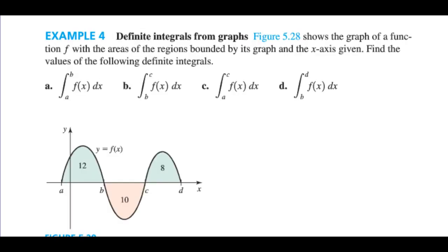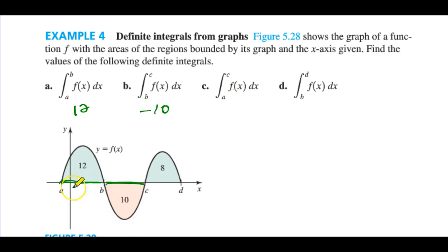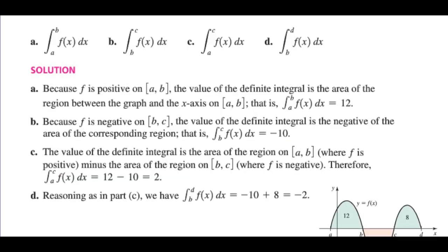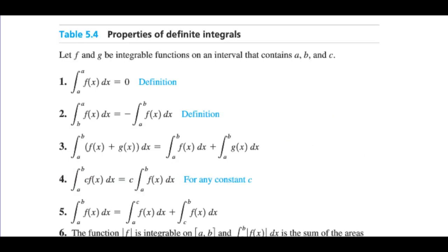Example number four: integrating from A to B, the area is 12. Integrating from B to C gives negative 10 because it's below the axis. So from A to C would be the sum: 12 minus 10. And from B to D would be negative 10 plus 8, giving an area of negative 2. Those are the author's answers.